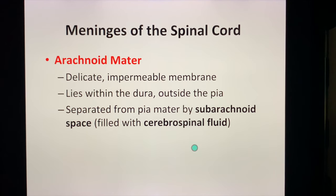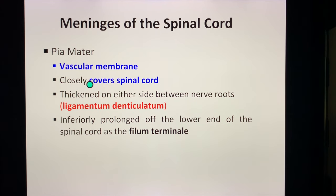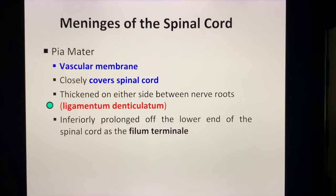The arachnoid mater is separated from the pia mater by a space called the subarachnoid space. This subarachnoid space is filled with cerebrospinal fluid, or CSF — this is where we would insert the needle to do a lumbar tap. The pia mater is a vascular membrane that closely covers the spinal cord. The pia mater becomes thickened on either side between your nerve roots, and this thickening is specifically called the ligamentum denticulatum.